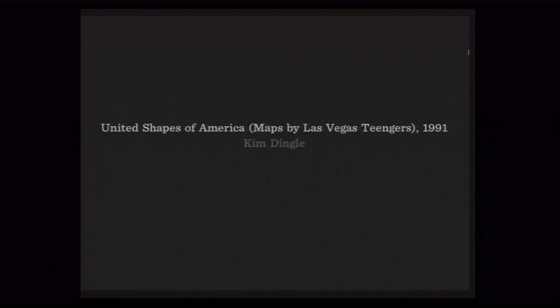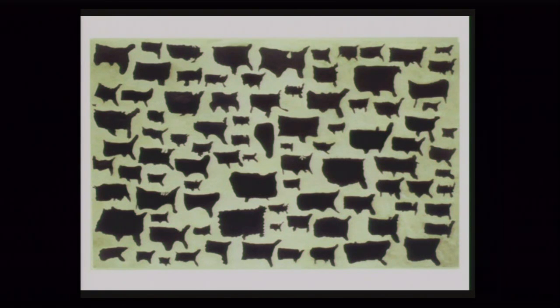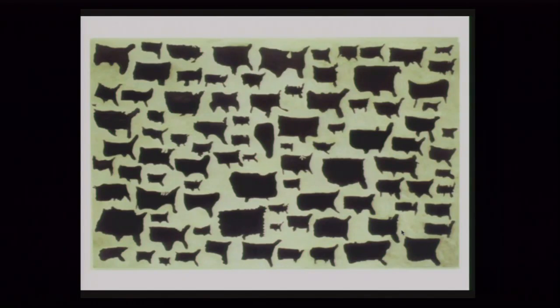Kim Dingle is an artist who sat with a set of Las Vegas teenagers and had them draw individual maps of the United States, then assembled all these into one large format painting. We're really good at teaching geography in the US, as you can see from this image. Some folks can sort of get out in front of this; some folks have not actually been outside of their home state. You know, the United States as a leaping sheep, or Florida as an actual sort of paddle. But it's a wonderful exploration about how people think about the shape of the US and the way that they remember it.